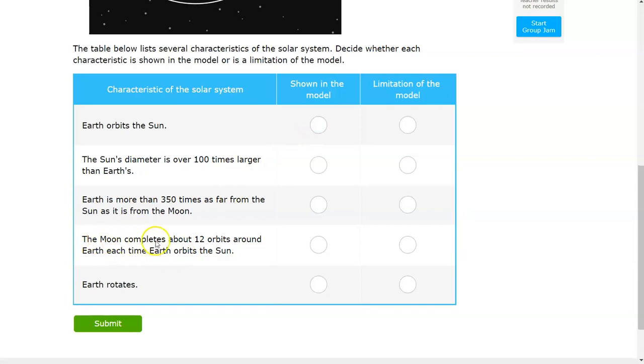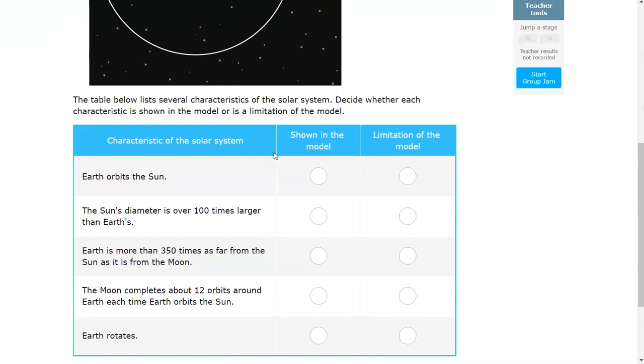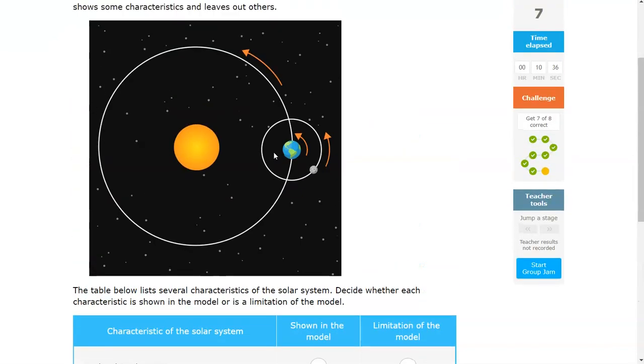Another question is, the Moon completes 12 orbits around the Earth each time. So does it show you, does it show that the Moon is orbiting around the Earth 12 times each time Earth orbits the Sun?